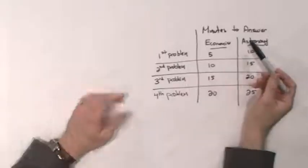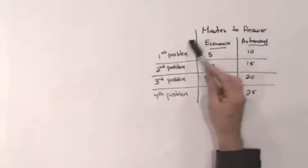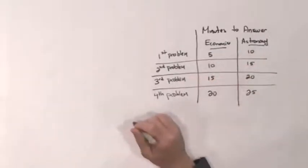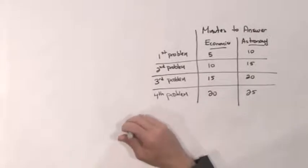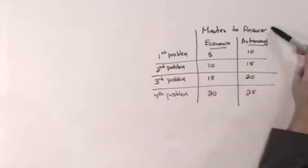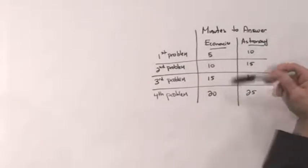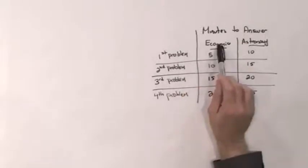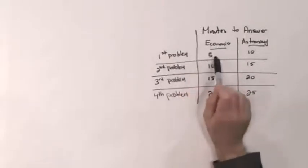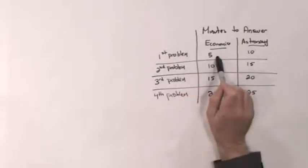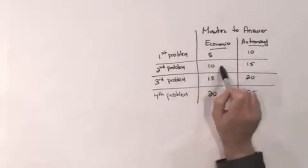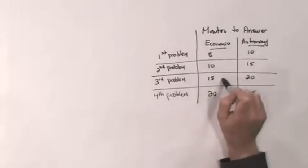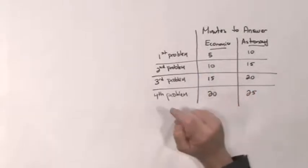Let's be more specific. Say you can calculate exactly how many minutes it takes you to answer a question in each class. This table shows the minutes it takes. For economics: the first problem takes 5 minutes, the second takes 10 minutes, the third takes 15 minutes, and the fourth takes 20 minutes.